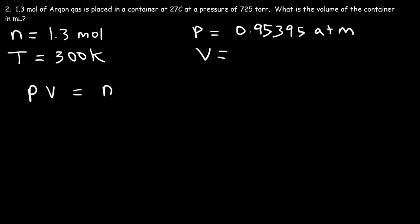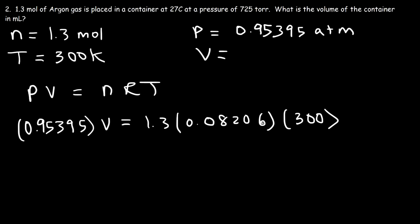So now we can calculate the volume. So let's use this equation, the ideal gas law equation. So P is 0.95395 multiplied by V. N is 1.3, R is going to be the same, 0.08206, and the temperature is 300 Kelvin.